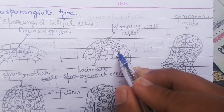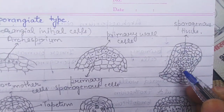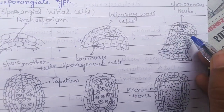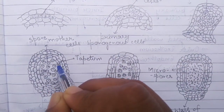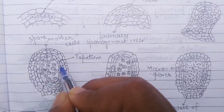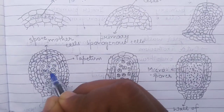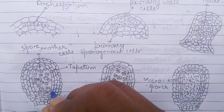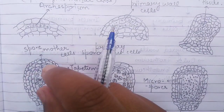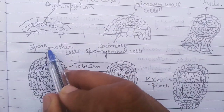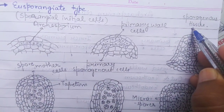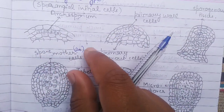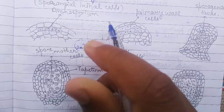Next come the inner primary sporogenous cells. They divide repeatedly to form a mass of sporogenous tissue. This mass of sporogenous tissue then differentiates into two regions: the outer single layer of tapetum, which provides nutrition and acts as a nutritive layer to the developing microspores inside the pollen sac, while the remaining cells become functional microspore mother cells. These microspore mother cells are diploid in nature and represent the last cells of the sporophytic generation.